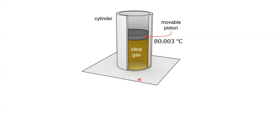Theoretically, you could reverse that sequence of steps — bring in a reservoir at the last temperature, wait for DQ to go from the gas into the reservoir bringing the gas temperature down, take away the reservoir, swap in a new reservoir at the next lower temperature, and so on. The process I just described — taking a gas through a sequence of temperatures reversibly — is not one of the processes in the Carnot cycle. The Carnot cycle has adiabats, which are different.